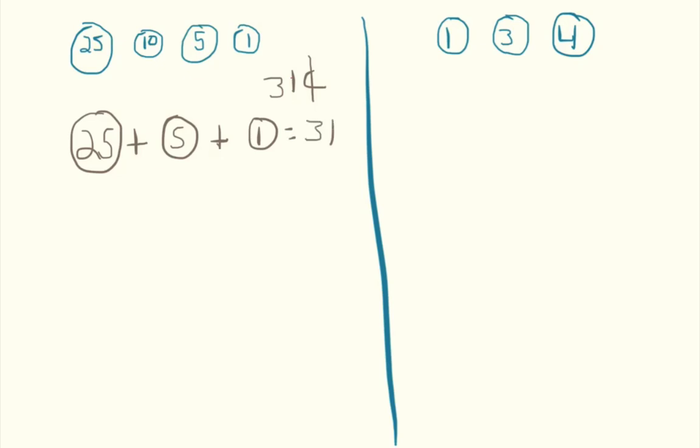In this case by going to the highest value first, which is what a greedy algorithm is always going to do, I went to the quarter first and that was the best way of doing it because this only took three coins.